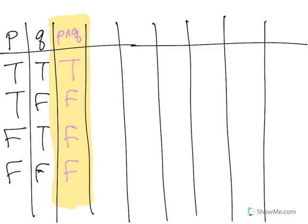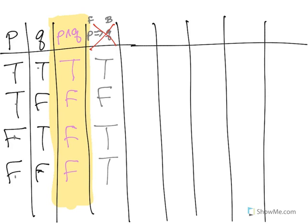Number one was the conditional if P then Q. Remember, conditionals are only false when the front end is true but the back end is false. So: true-true gives true; true-false gives false — that's the only false case; and the last two where P is false are both true. You will notice this if P then Q does not match our highlighted column, so this is not equivalent.